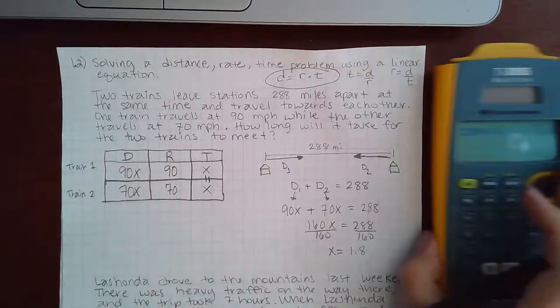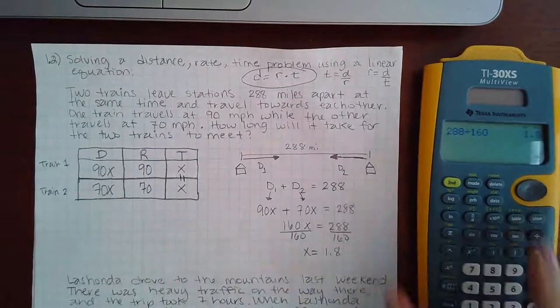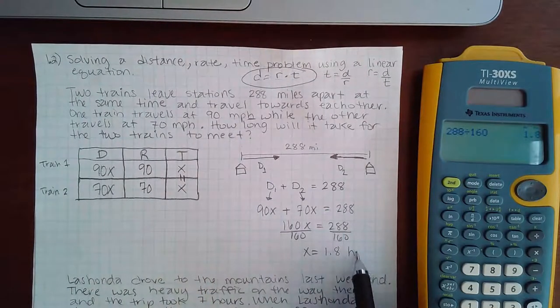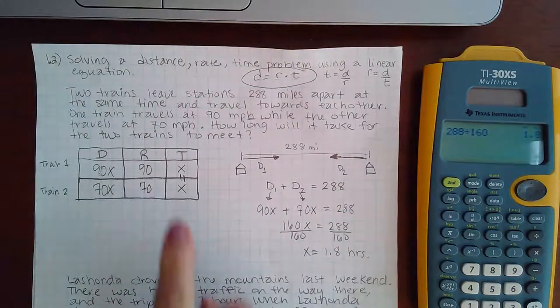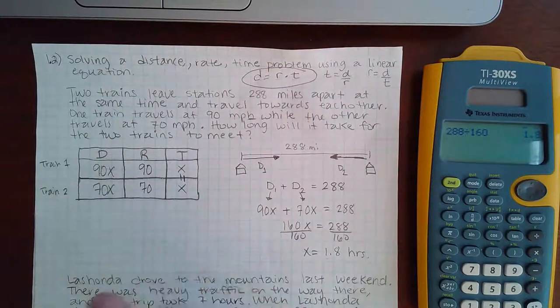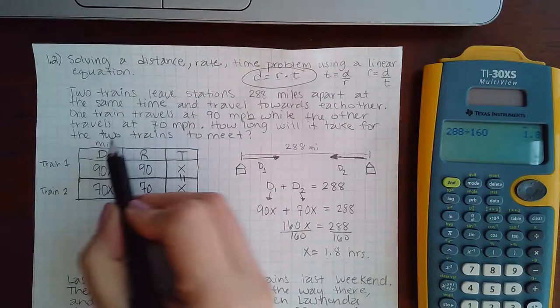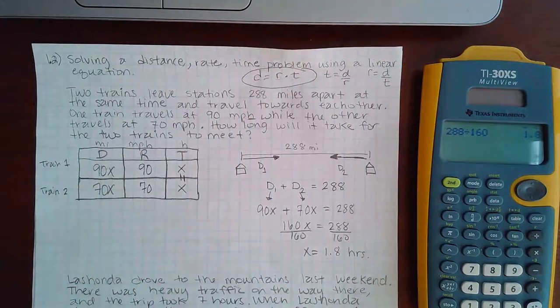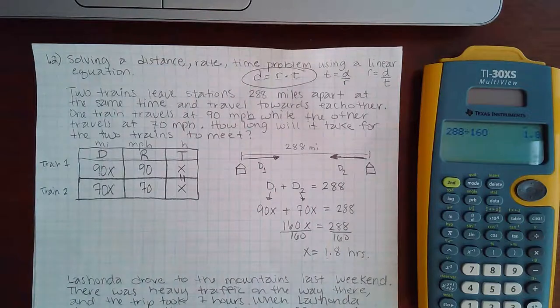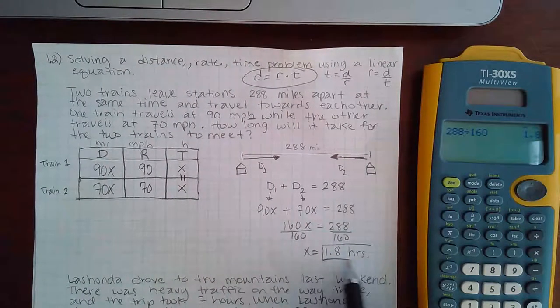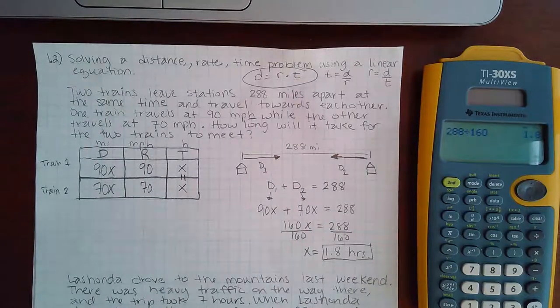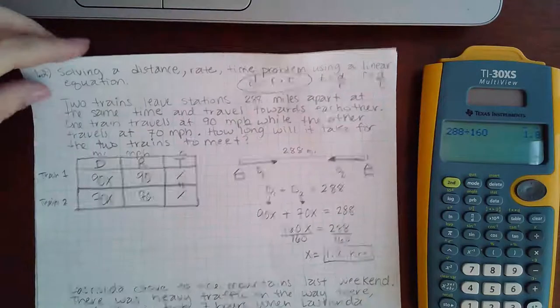So since it was miles per hour, miles per hour, that means this is going to be in hours because it is considered our time. Our distance would be in miles, our rate is in miles per hour, and then our time is in hours. So my answer here would be how long will it take for the two trains to meet? It will take 1.8 hours for those two trains to meet.